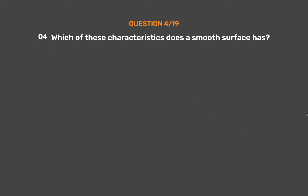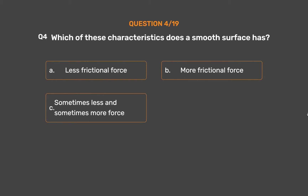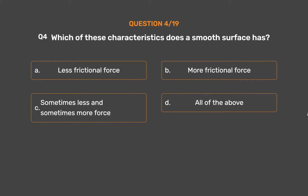Question number 4. Which of these characteristics does a smooth surface have? Option A: Less frictional force. Option B: More frictional force. Option C: Sometimes less and sometimes more force. Option D: All of the above.